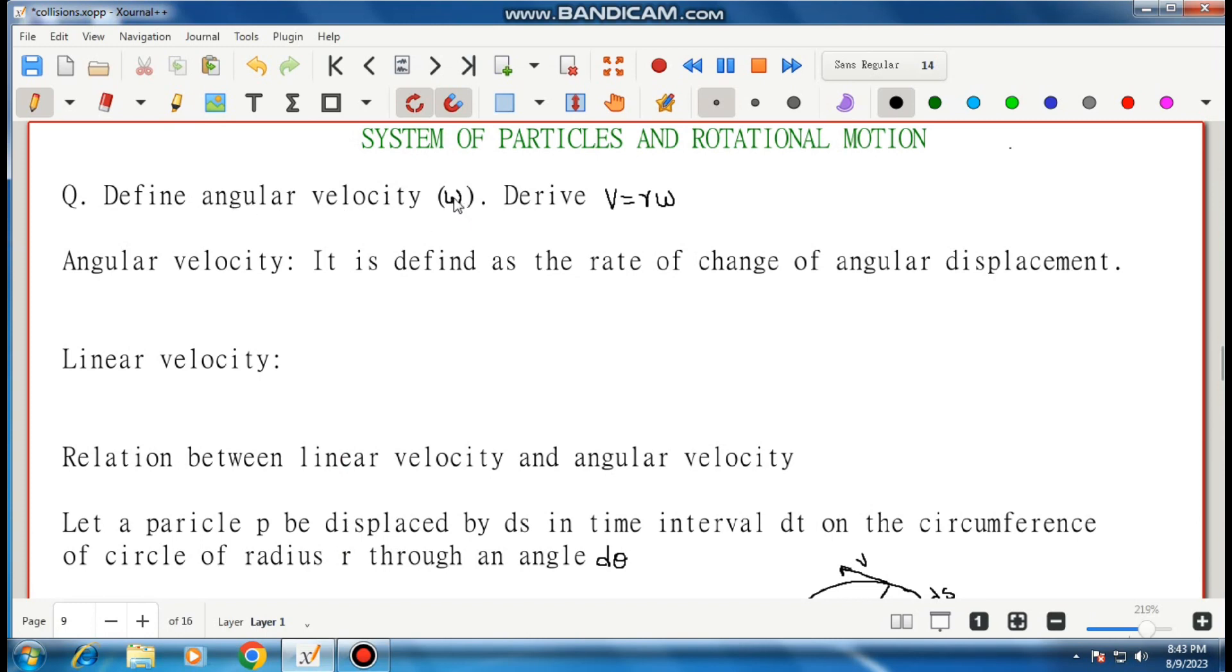Define angular velocity. The symbol is omega. Derive v equals r omega. We have to derive this expression. So first, we write the definition of angular velocity. It is defined as the rate of change